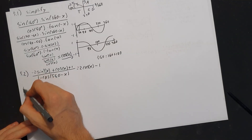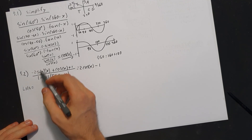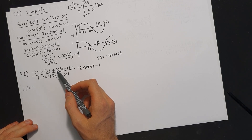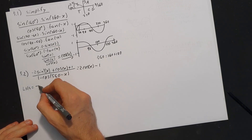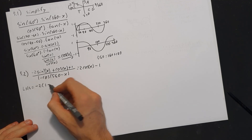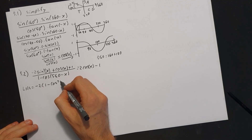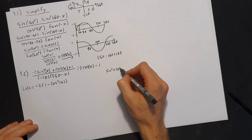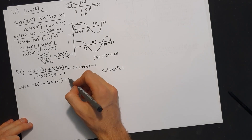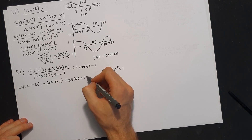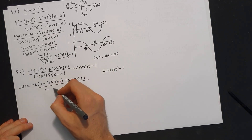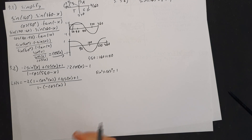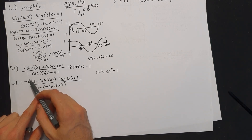Starting with the left-hand side: we change sine squared x using the identity sine squared x plus cos squared x equals 1, so sine squared x equals 1 minus cos squared x. Substituting gives us negative 2(1 minus cos squared x) plus cos x plus 1, all over 1 plus cos x.